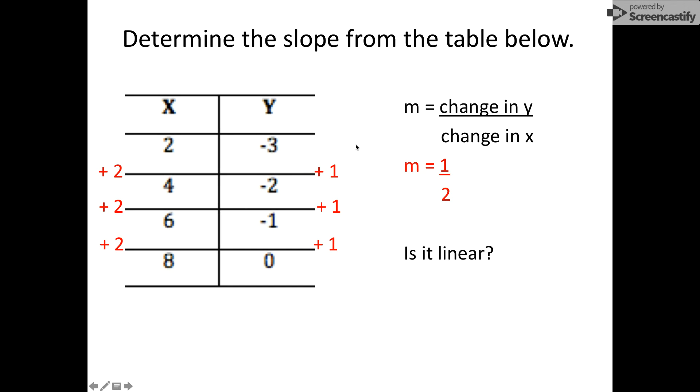You could take these four sets of coordinates, plot them on a coordinate plane, and graph them and determine if they are in a straight line. Or, you could look at the rate of change. When they add 1 in a consistent rate of change, and add 2 in a consistent rate of change over here, that tells you that yes, it is linear.